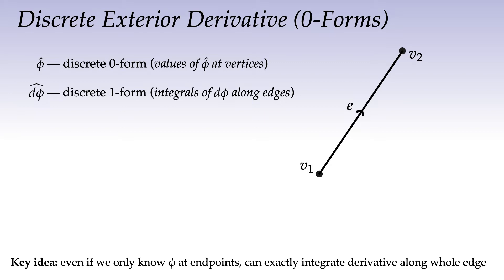The key idea is that even if we know φ only at the two endpoints, we can still exactly integrate the derivative along the whole edge. We want to know dφ̂ over the edge. By definition, it's the integral of the continuous one-form dφ over the edge e. Whenever you see an integral of a derivative, that should remind you of Stokes' theorem: exchange the derivative in the integrand for the boundary of the domain.